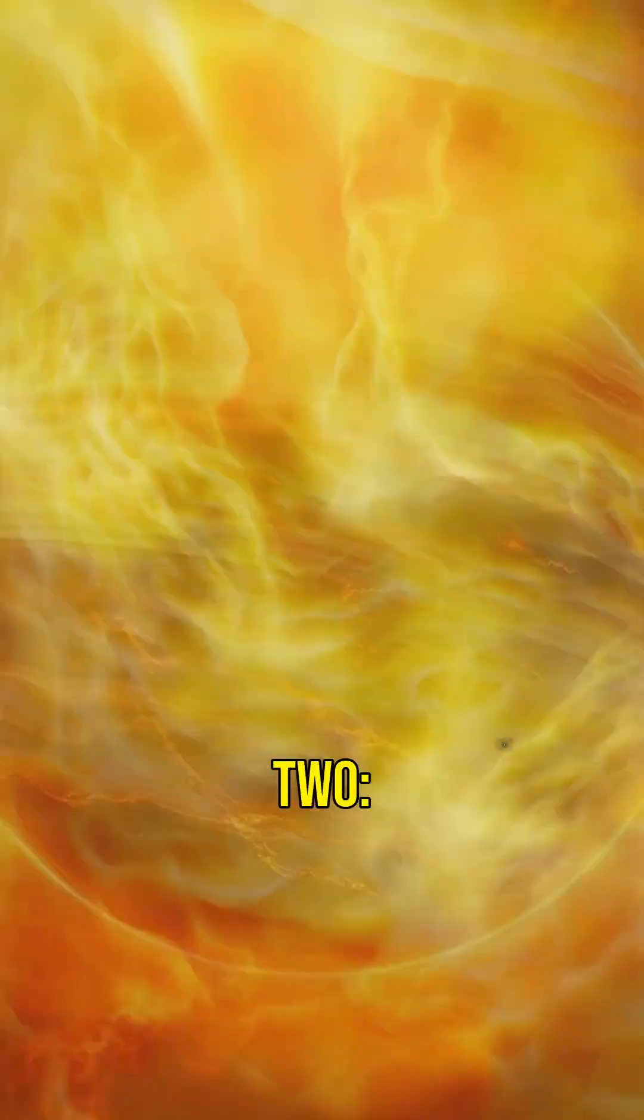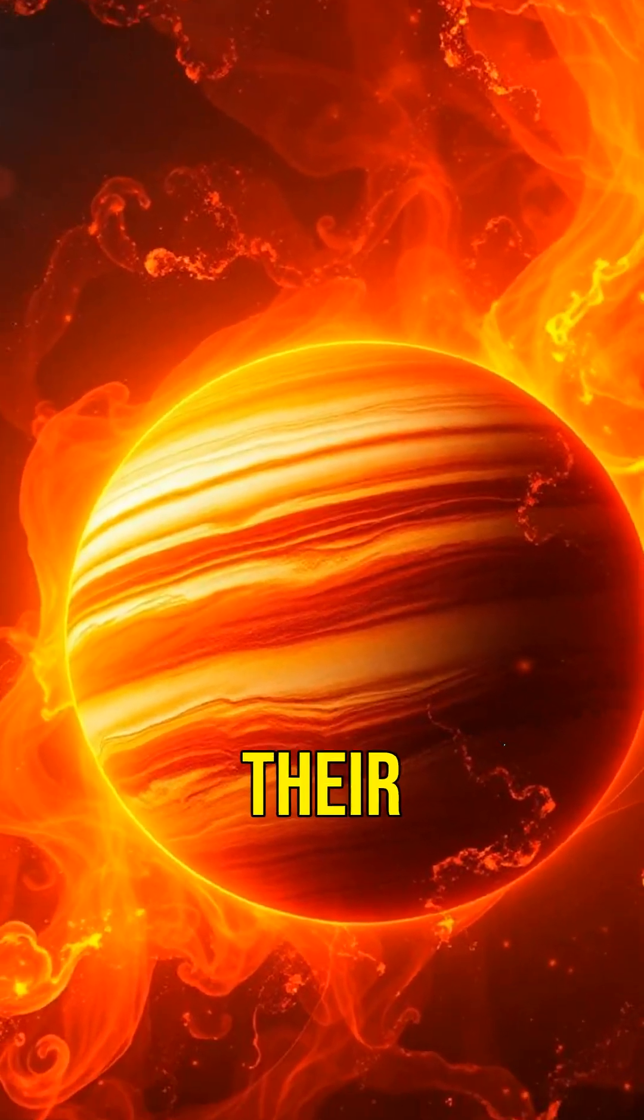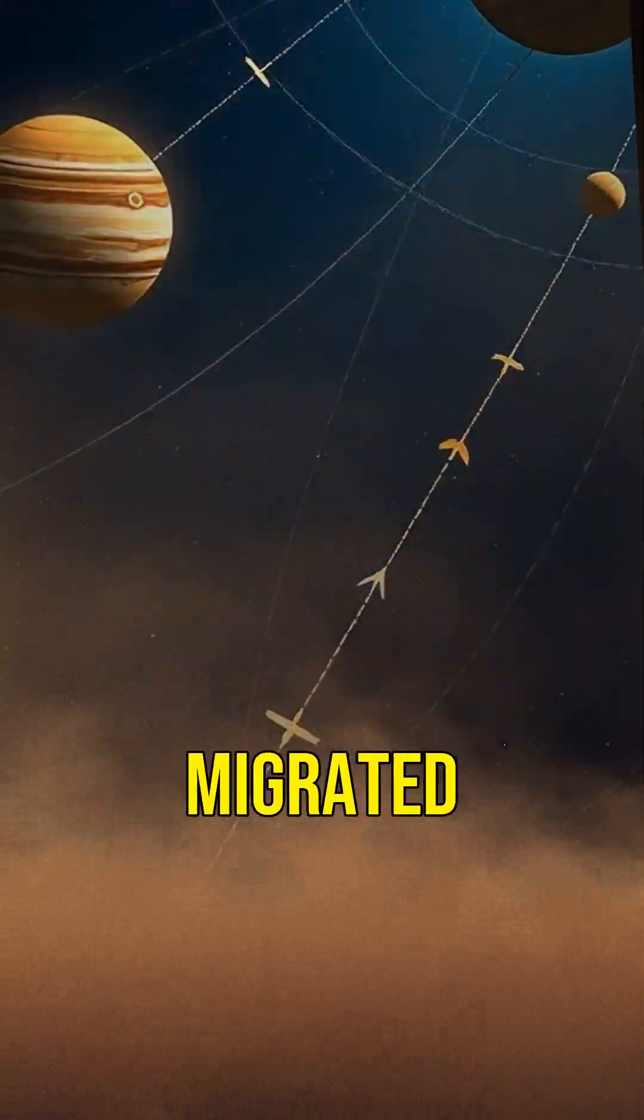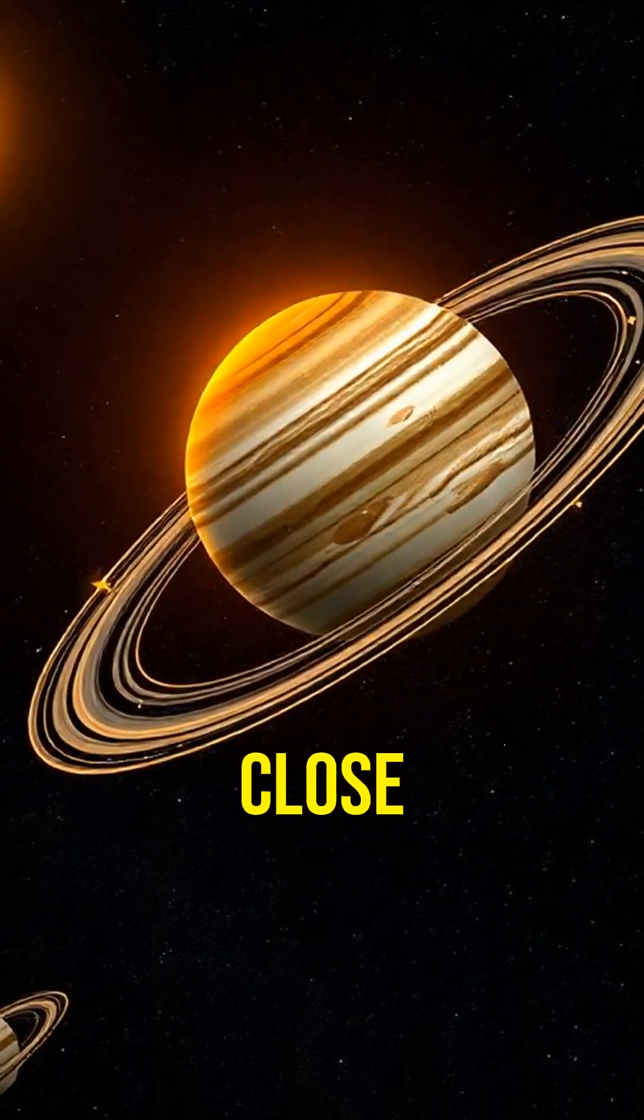Fact 2: These planets can reach temperatures over 1,000 degrees Celsius due to their proximity to their stars. Fact 3: Hot Jupiters are believed to have migrated from their original positions far from the star to their current close orbits.